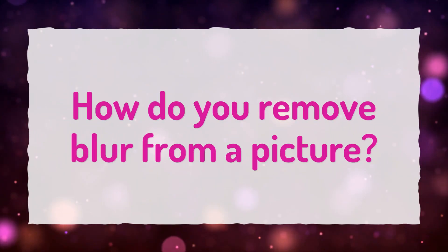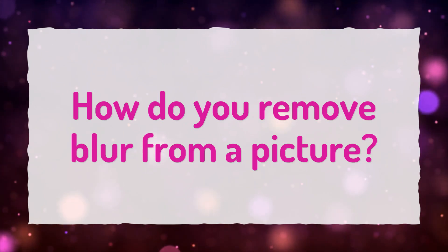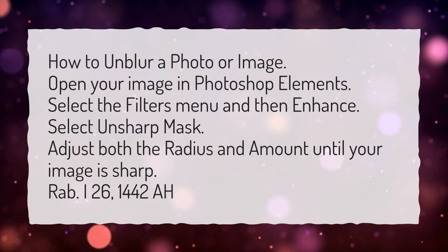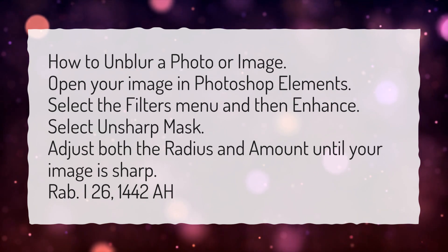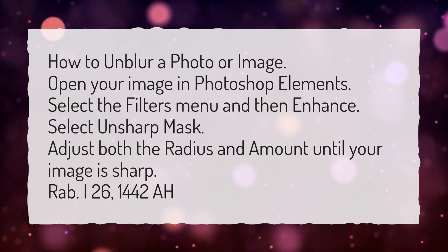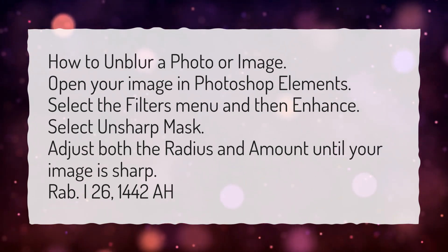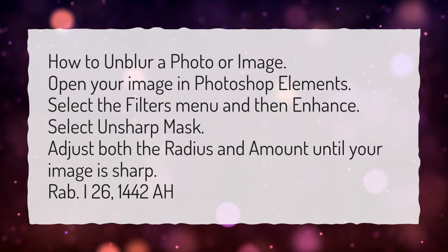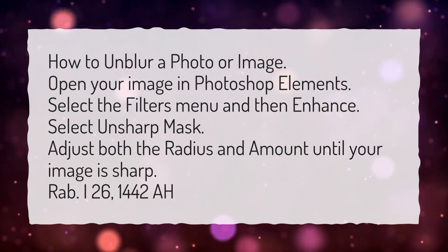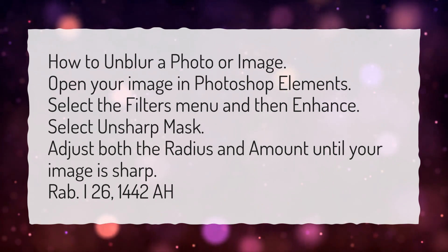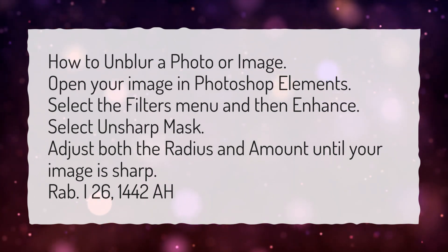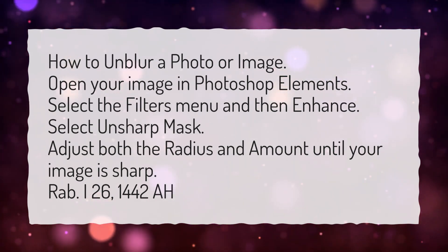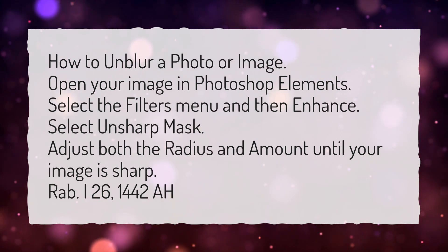How do you remove blur from a picture? How to unblur a photo or image? Open your image in Photoshop Elements. Select the filters menu and then Enhance. Select Unsharp Mask. Adjust both the radius and amount until your image is sharp.